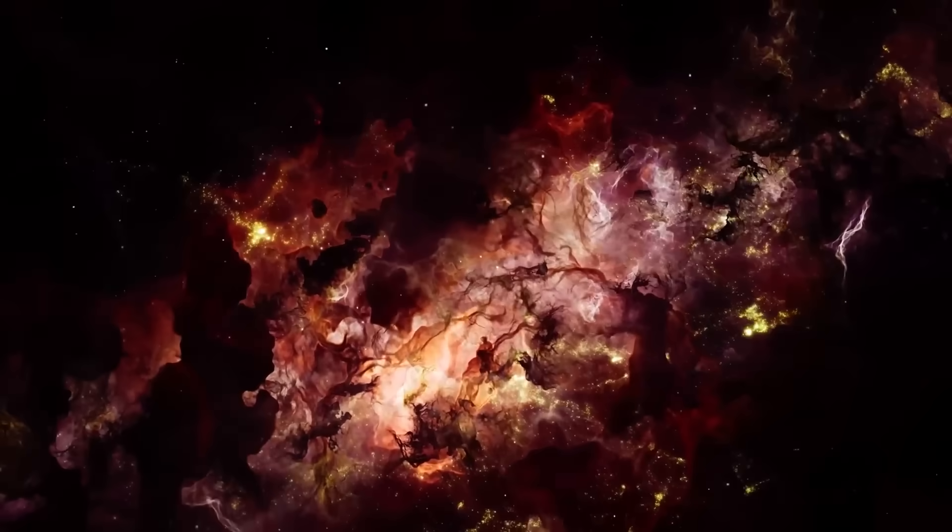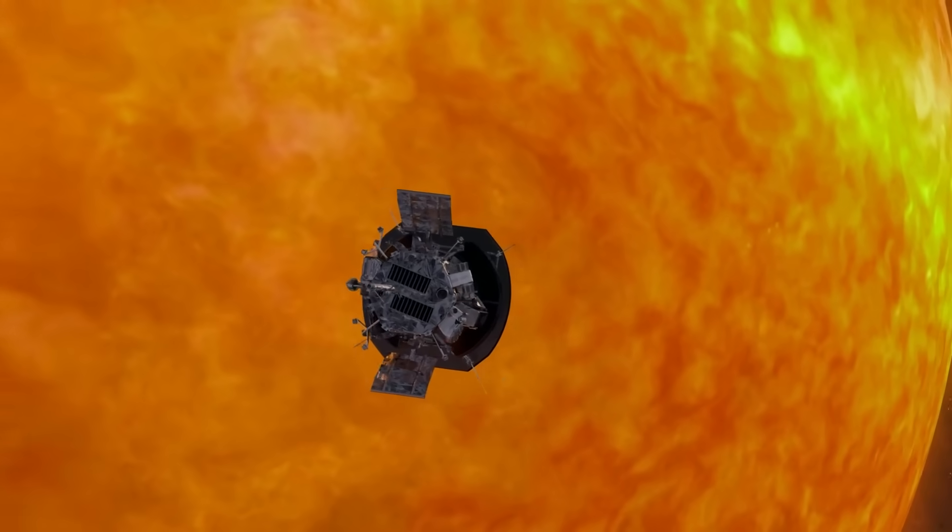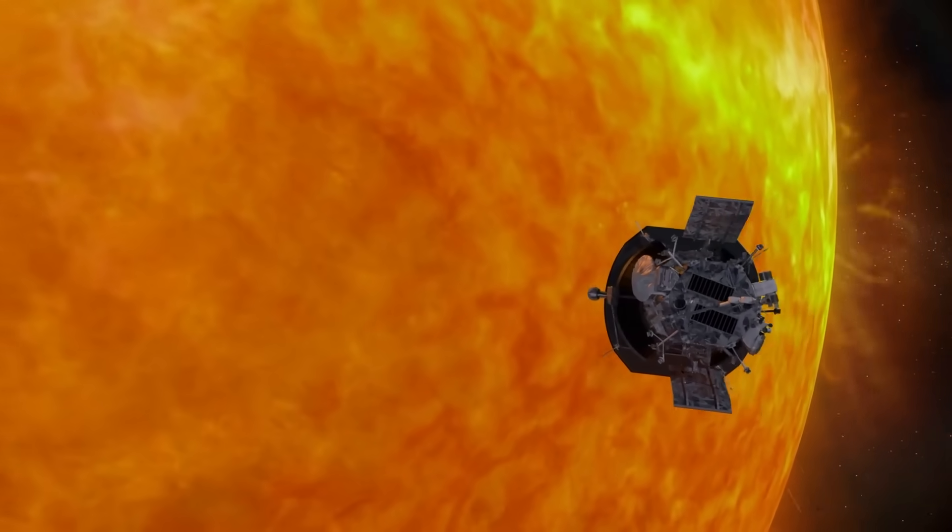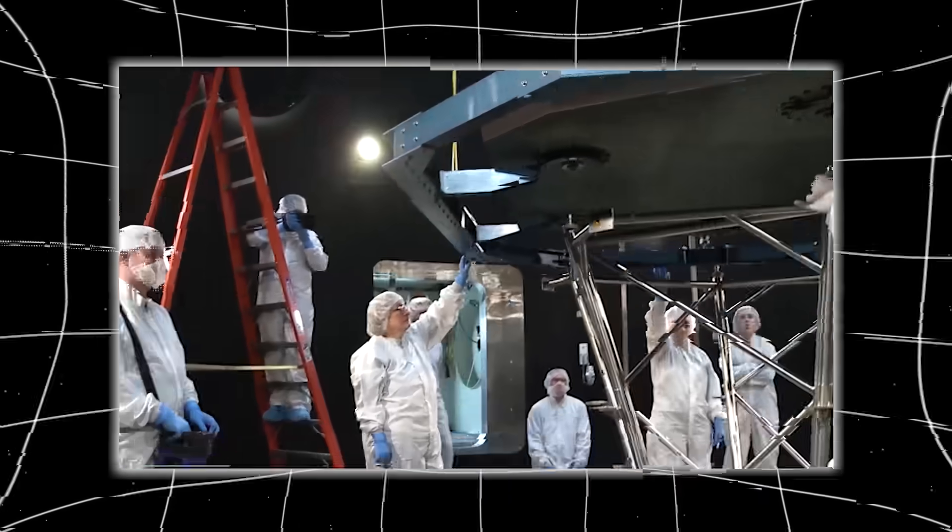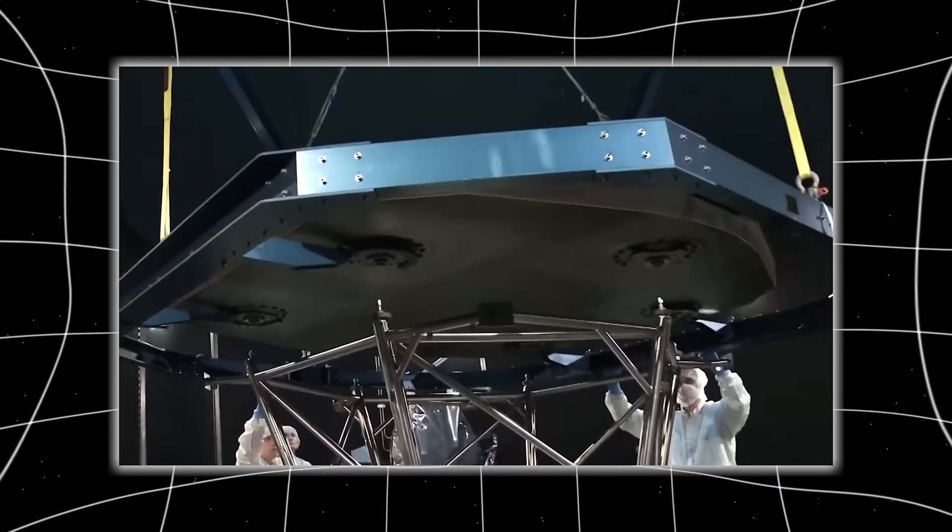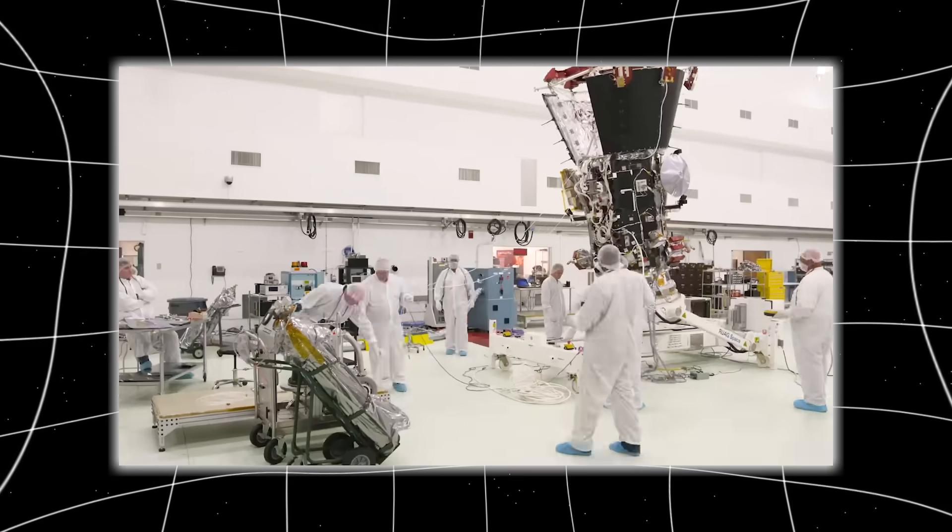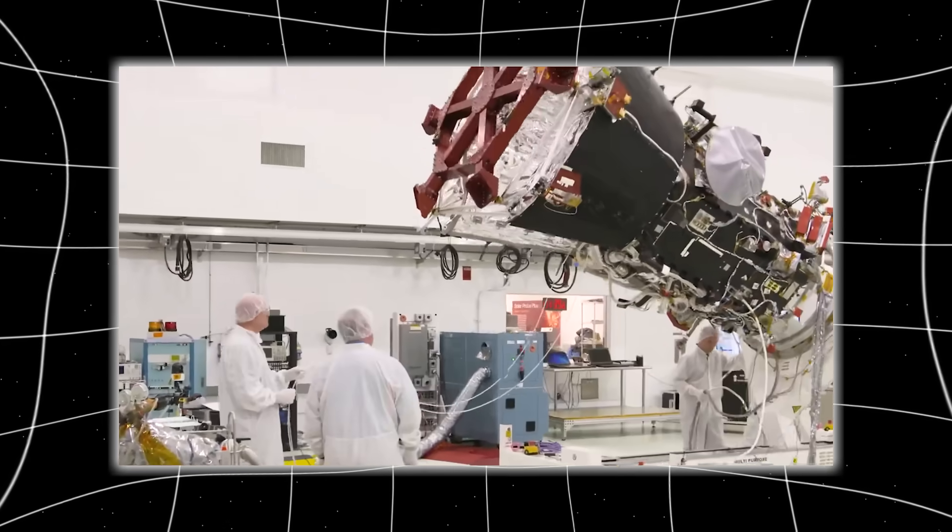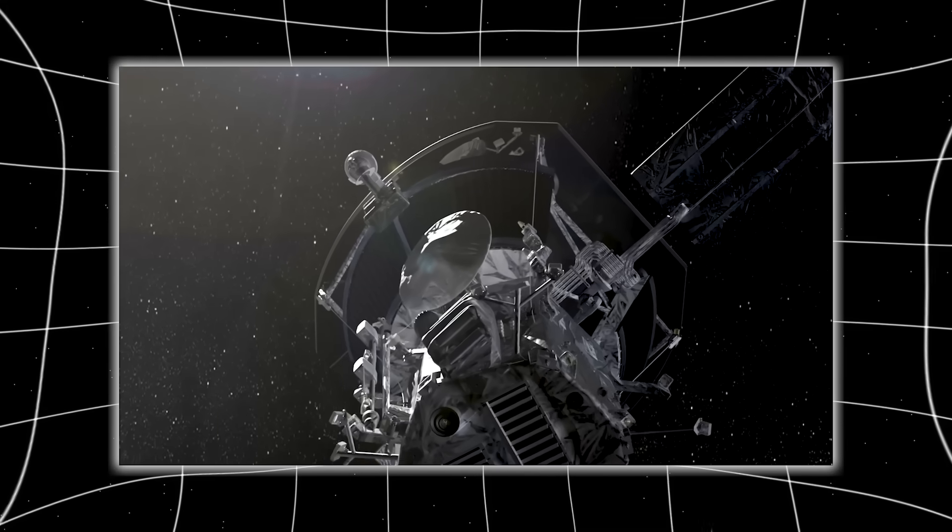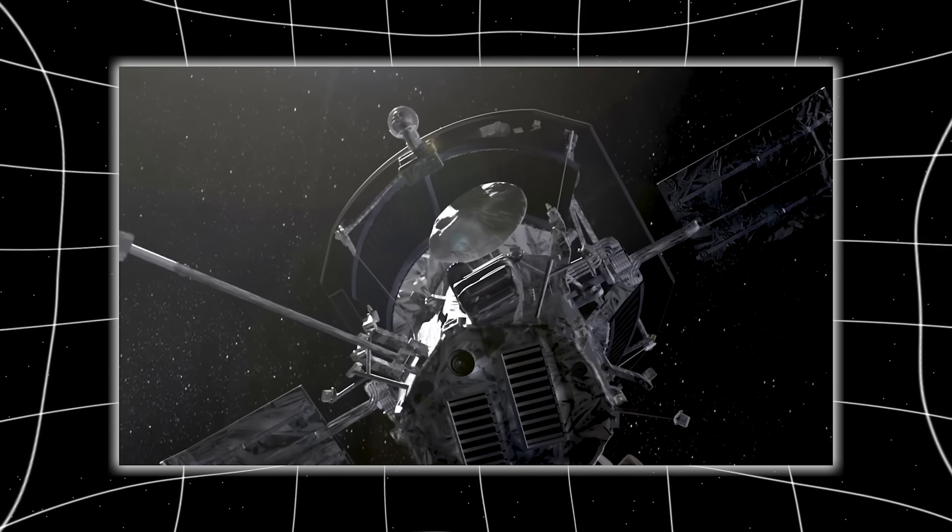But this wasn't just about speed, it was about intent. The Parker probe was engineered to dive five solar diameters away from the Sun's surface. To survive that journey, it carried a heat shield unlike anything ever built, a thick carbon composite shell, always angled perfectly to block the unrelenting radiation. But even with all precautions, something strange occurred.